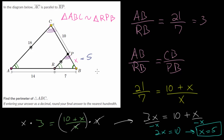We can double-check that this makes sense, because we know the proportionality constant is 3. Going from the smaller triangle to the bigger triangle, we multiply all side lengths by 3. Comparing PB, which is 5, to its corresponding side CB on the big triangle: CB is 10 plus 5, which is 15, and 5 times 3 is indeed 15. We can also go from the bigger triangle back to the smaller by dividing by 3, so the missing side RP would be 18 divided by 3, which is 6.